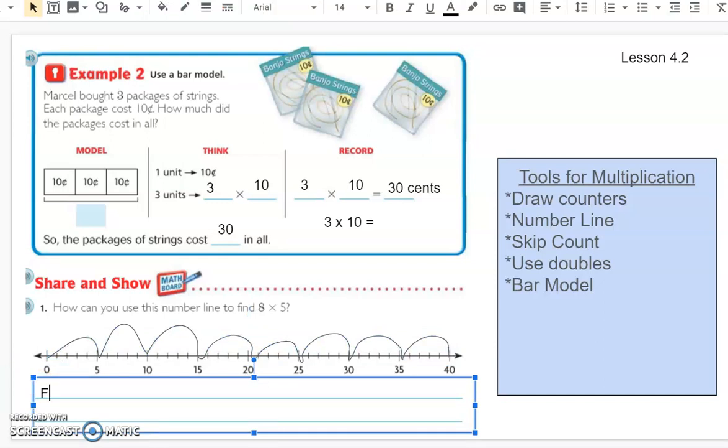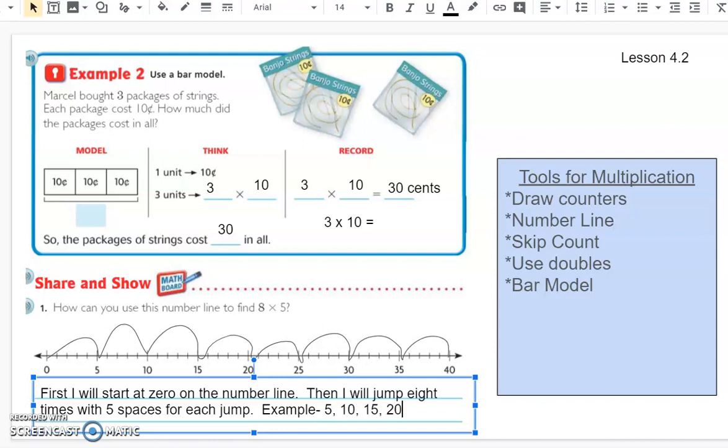So I'm going to say, first, I will start at zero on the number line. It's always good to use these types of words, first, next, last, when you're giving instructions, when you're explaining something of how you did something. So then I will jump eight times with five spaces for each jump. And then I'm going to give a sample, a little example here. It doesn't hurt to use numbers then when you're finished. Five, 10, 15, 20, 25, 30, 40.